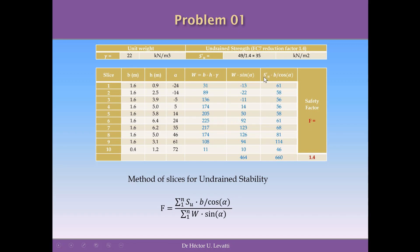For the numerator, we multiply the undrained strength of 35 by the width B and divide by the cosine of alpha for each slice. Summing that column gives the numerator. The safety factor is 660 divided by 464, giving approximately 1.4 as the safety factor for this particular slope and problem.